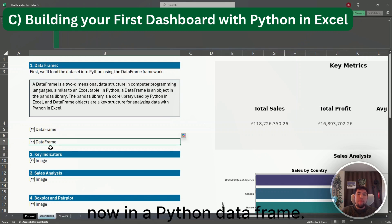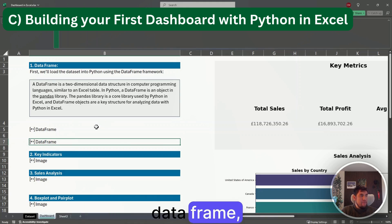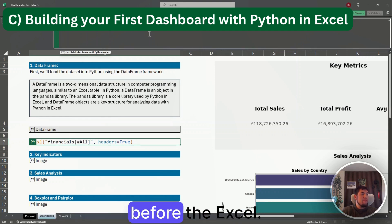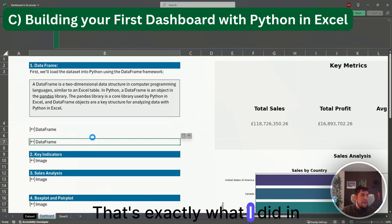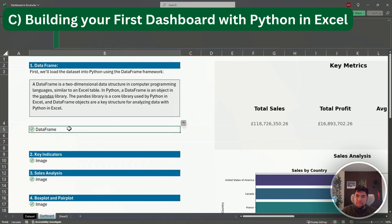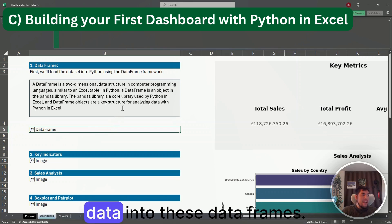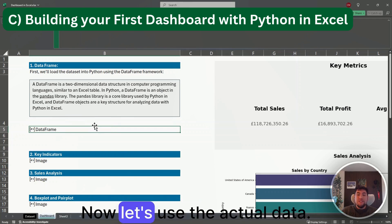After that, the cell will start to appear as busy and then the data frame indicator will appear showing us that your data is now in a Python data frame. If you want to name that data frame, you only need to put the name before the xl function, for example 'table equals' and then the formula that we just did. That's exactly what I did in this cell already and I named our data 'data'.